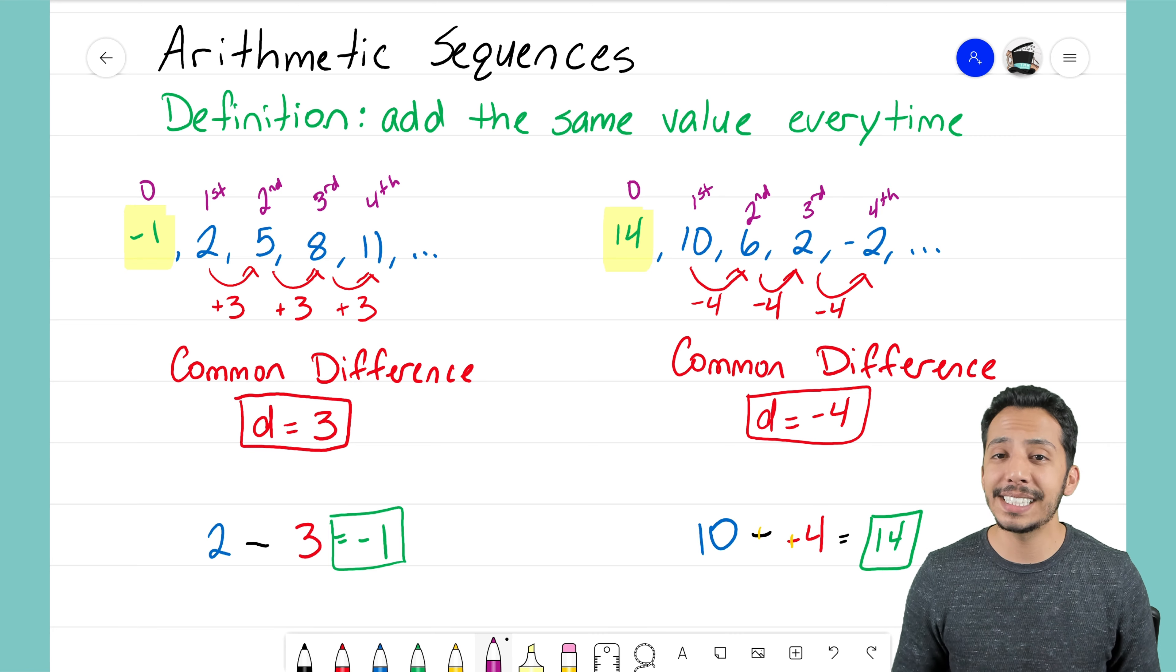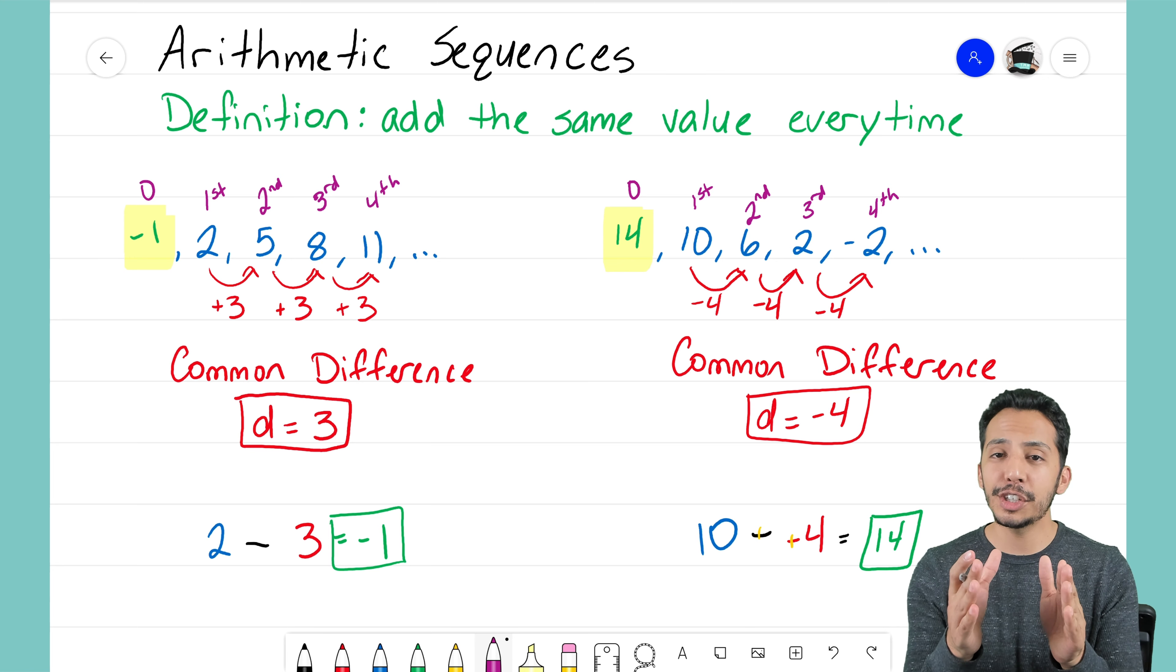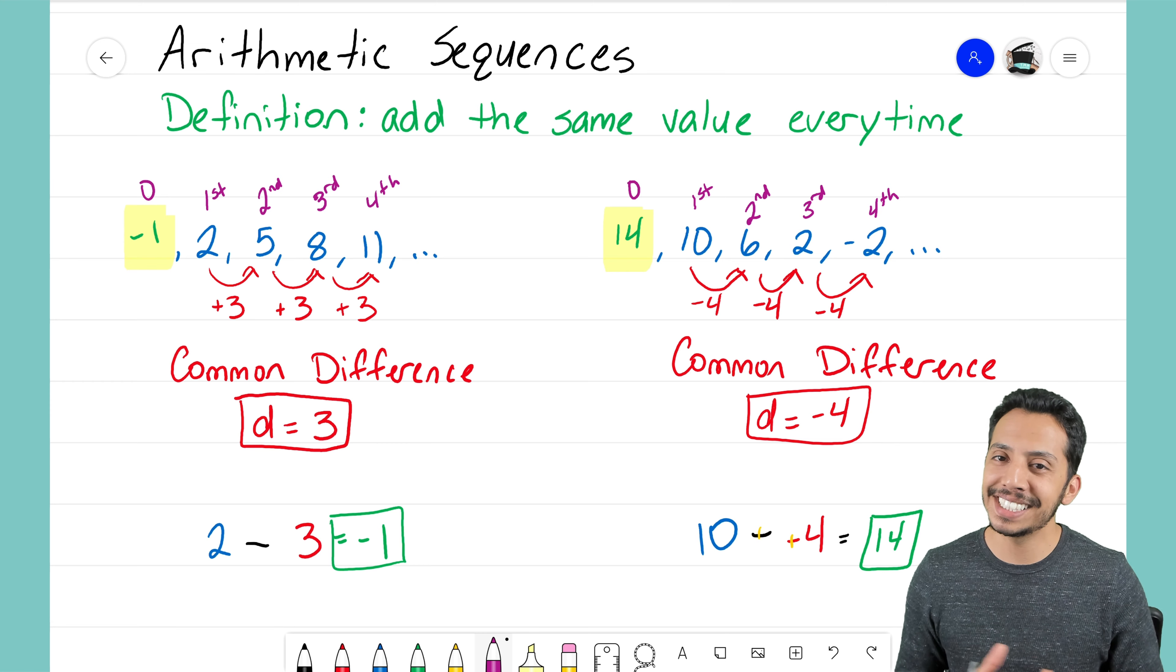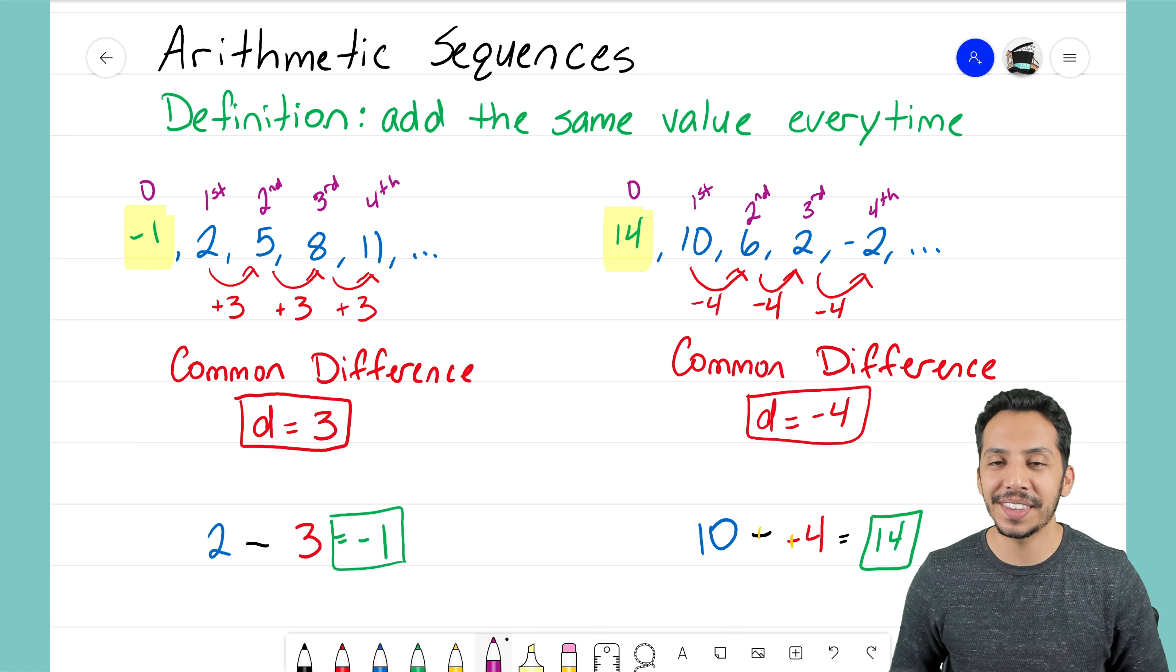And that's it. That's how you find the zero term. It's as simple as taking your first term and subtracting your common difference. Alright guys, it's that math magician, and I'll see you on the next video.